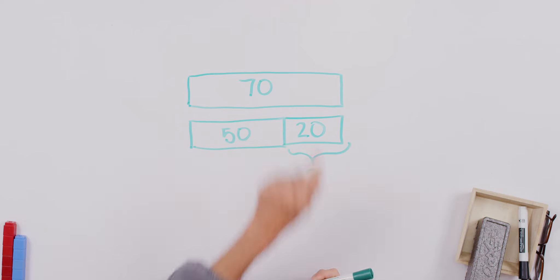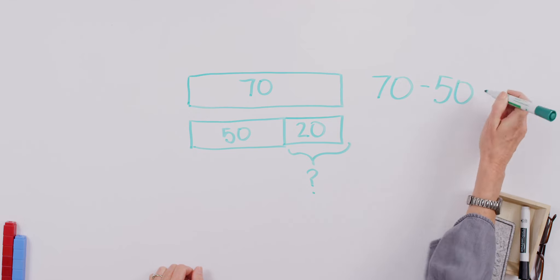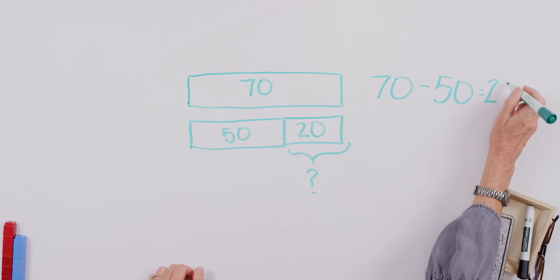Part, part, whole. So it looks like this. 70 minus. And we're working with difference. It's a minus sign. And that equals 20. Good job.